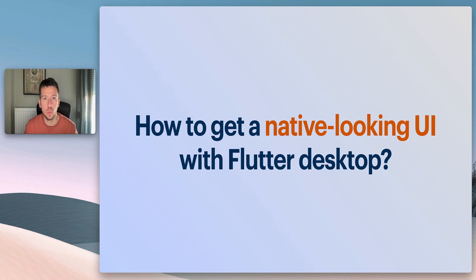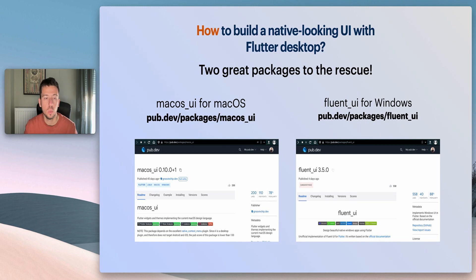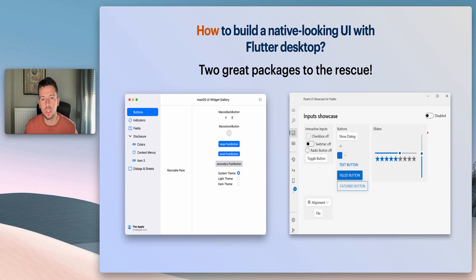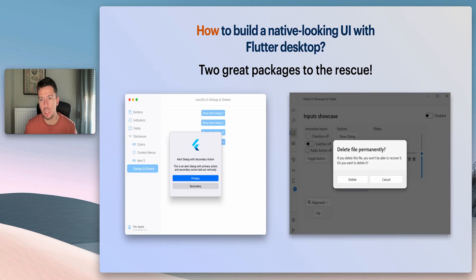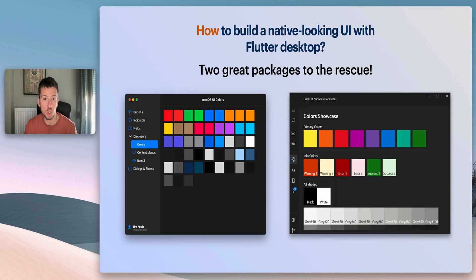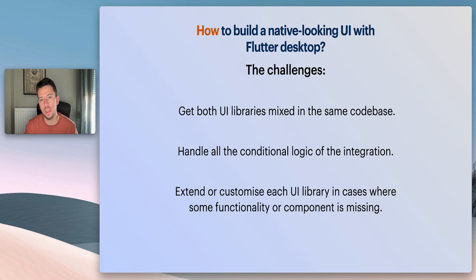Now let's see how you can achieve a native looking UI with Flutter for desktop. We mostly use two great packages: the macOS UI package for macOS and the Fluent UI package for Windows. They both provide a wealth of useful widgets like buttons, drop-downs, list styles, a basic layout scaffold, dialogs, and correct opacity animations for each system, as well as default colors and shadows. The real challenge with Flutter is mixing both libraries in the same codebase, handling all the conditional logic, and extending or customizing the libraries when some component or functionality is missing.